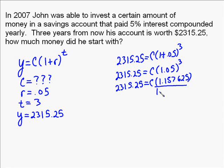Now we just have a normal equation. We divide both sides by 1.157625, and it turns out that C is going to equal 2,000.